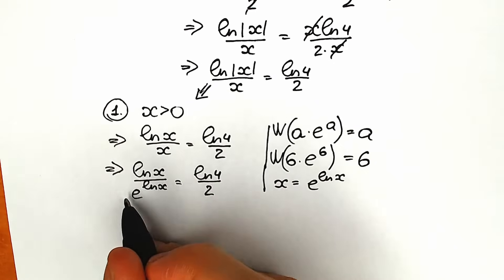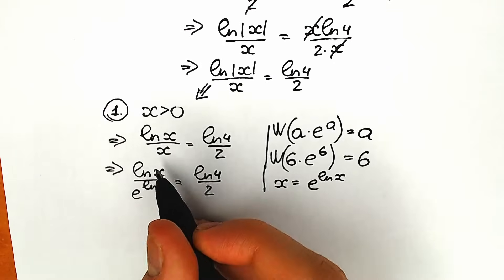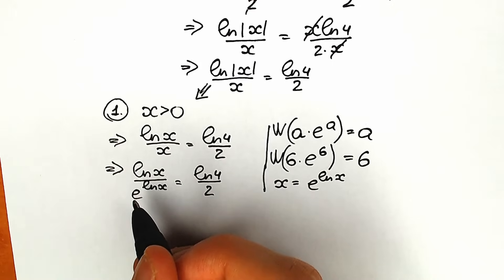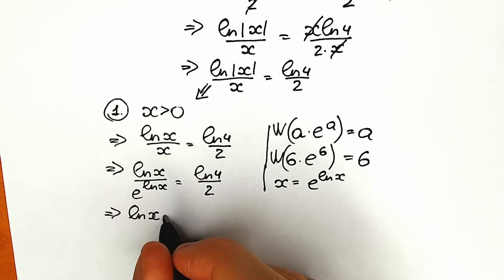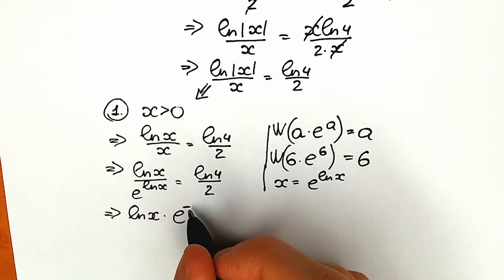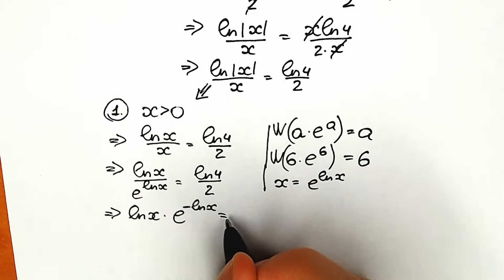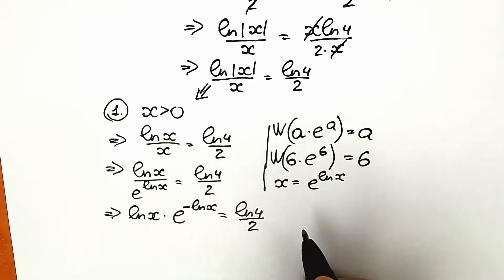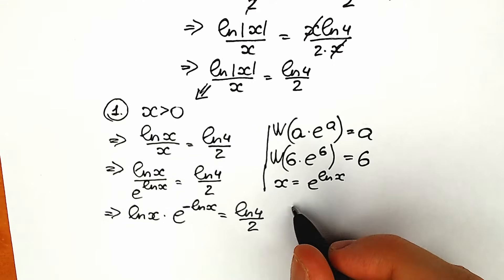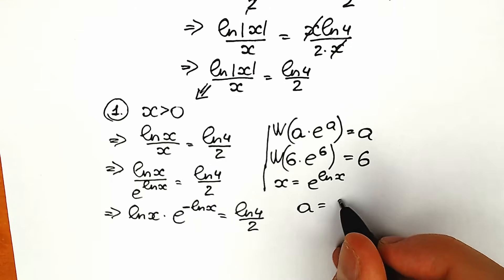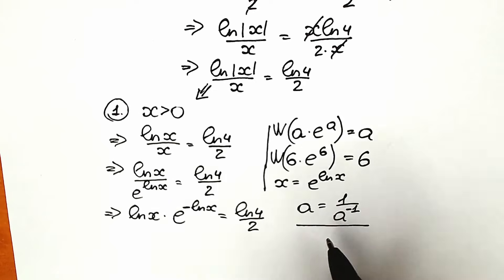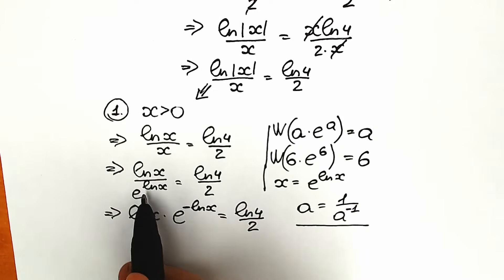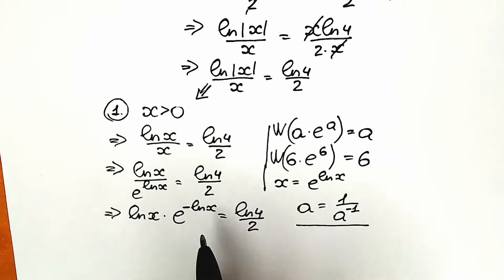Bringing e^(ln x) to the numerator with a negative exponent gives us: ln(x) · e^(−ln x) = ln4 / 2. We have ln(x) and e^(−ln x), which is close to the Lambert W form a·e^a, but we need the same expression in both places. The last tricky move is to multiply both sides by −1.